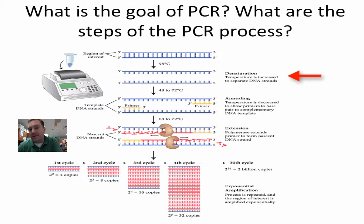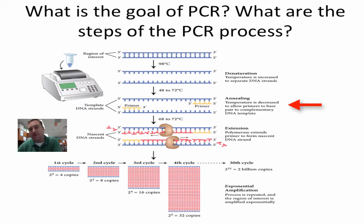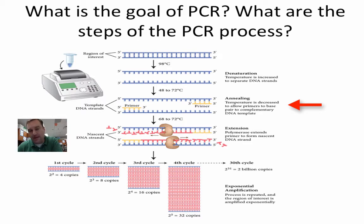Once the DNA is unzipped, you cool it down a little — not all the way so it zips back up, just a little. This process is called annealing. During this cool-down step, the DNA does not zip back up, but it's cool enough for the primers to attach to the DNA. These primers tell the DNA polymerase where to attach and start making the complementary strands.